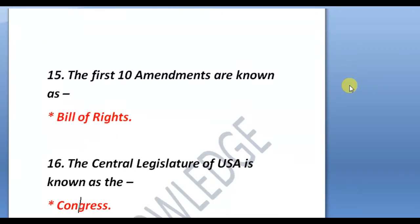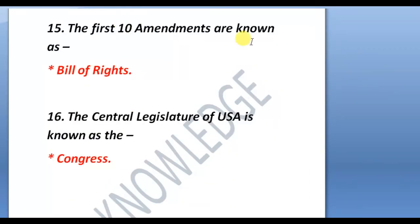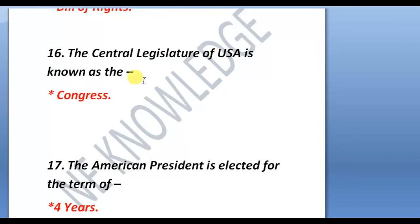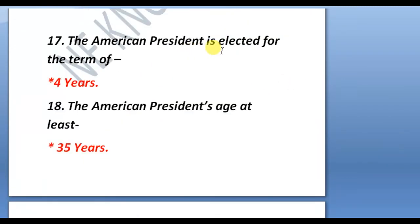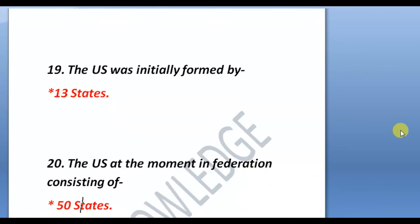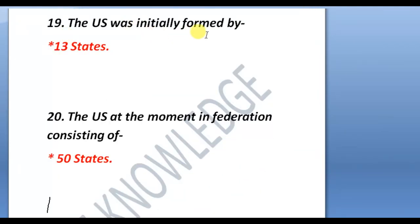Next question: the first 10 amendments are known as the Bill of Rights. Next question: the central legislature of the USA is known as the Congress. The American president is elected for a term of four years, and the American president must be at least 35 years of age.